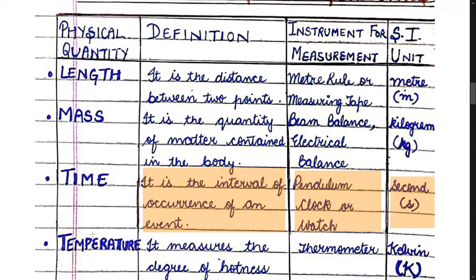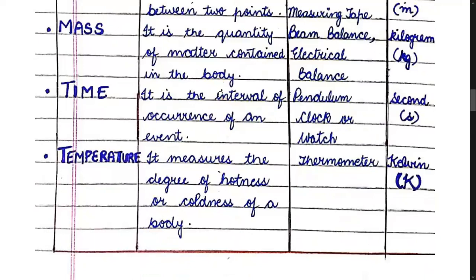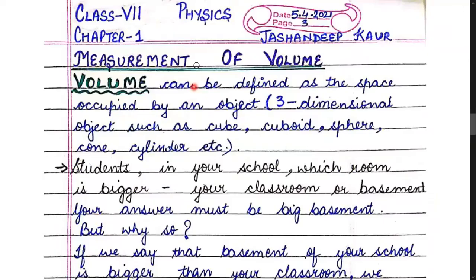The next physical quantity is temperature. Temperature measures the degree of hotness or coldness of an object. The instrument used is a thermometer, and the SI unit of temperature is Kelvin — K-E-L-V-I-N. Note: the SI unit is not degree Celsius; it is Kelvin. So we have now understood physical quantities and measurement.